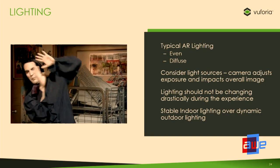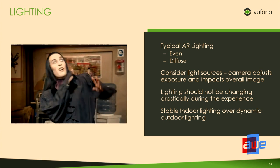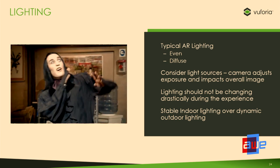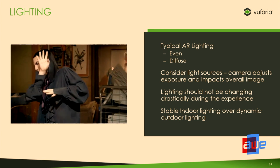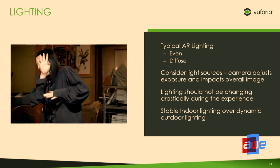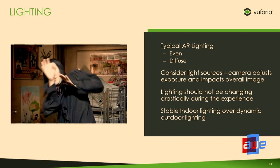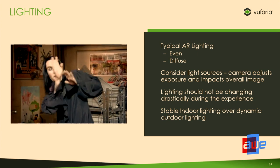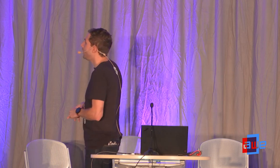Lighting is extremely important when it comes to computer vision, and it's no different with model targets. We recommend an evenly lit area with diffuse lighting. Very bright or dark spots can manipulate the camera's exposure and cause unintended consequences. Lighting should also remain fairly static — stay away from anything flashing or like a disco ball. In general, stable indoor lighting is always preferred over dynamic outdoor lighting, which changes a lot throughout the day.